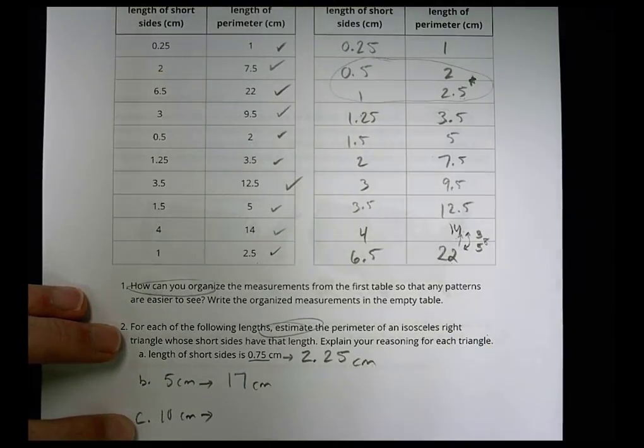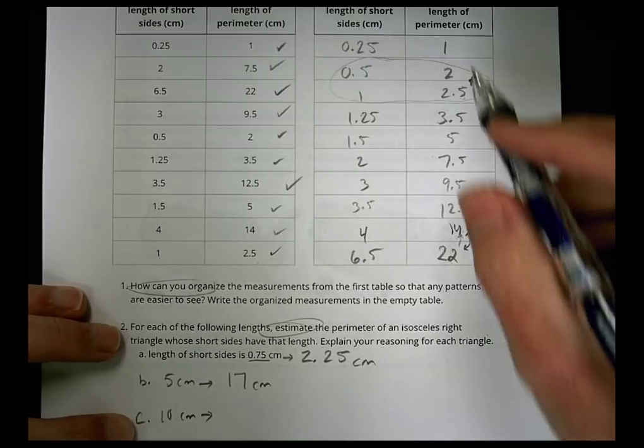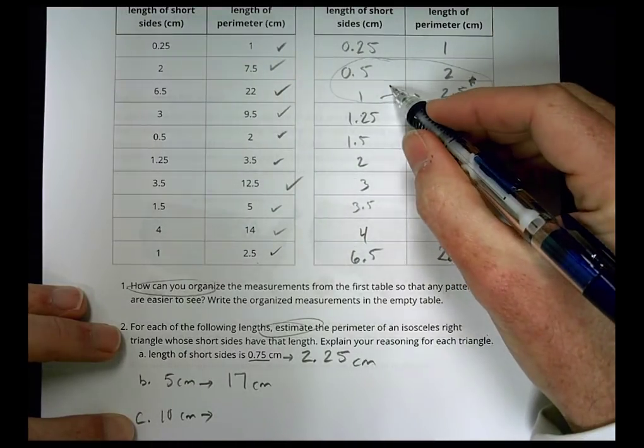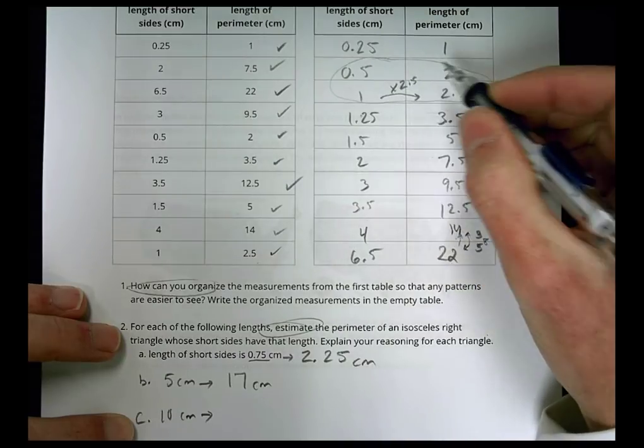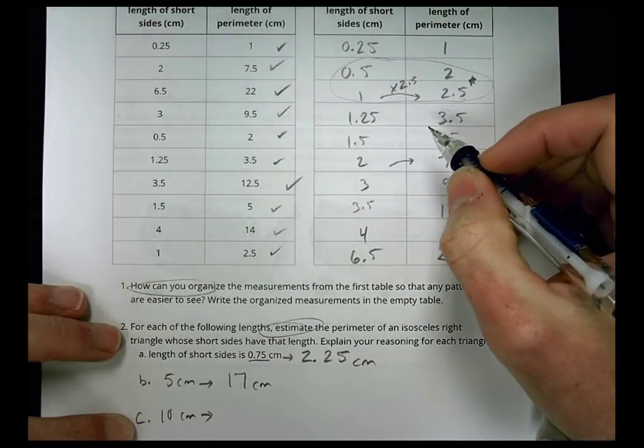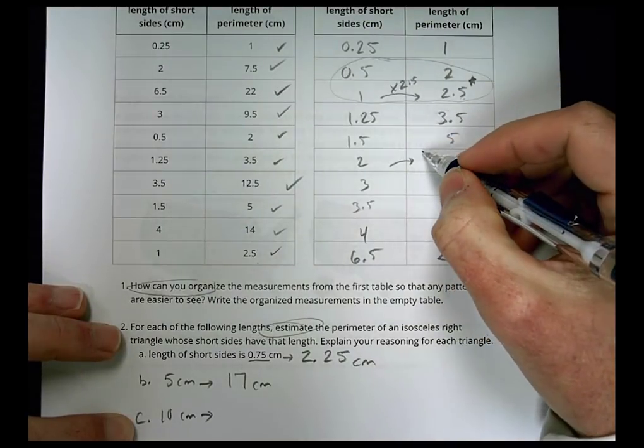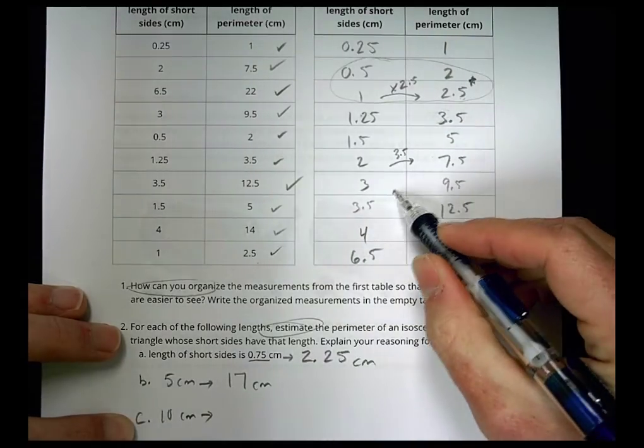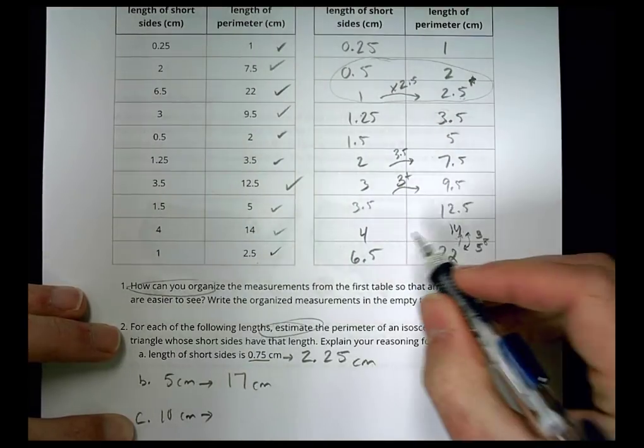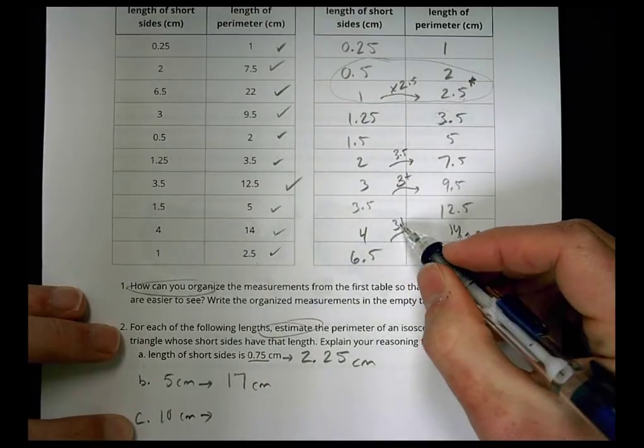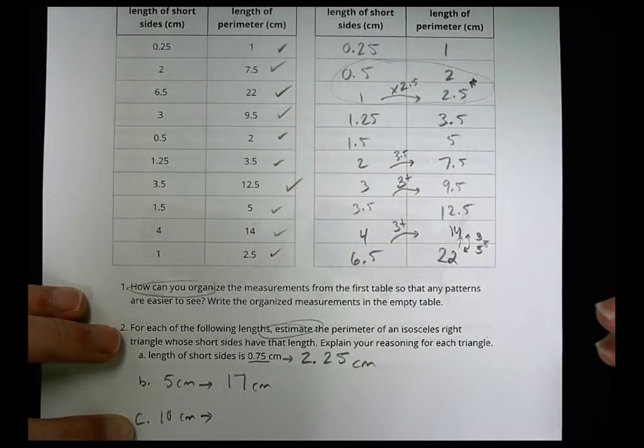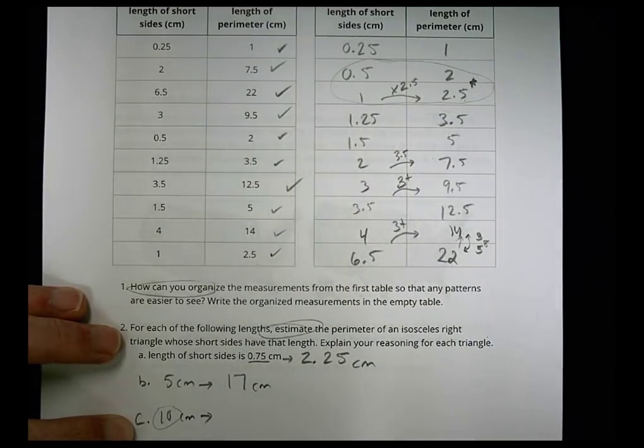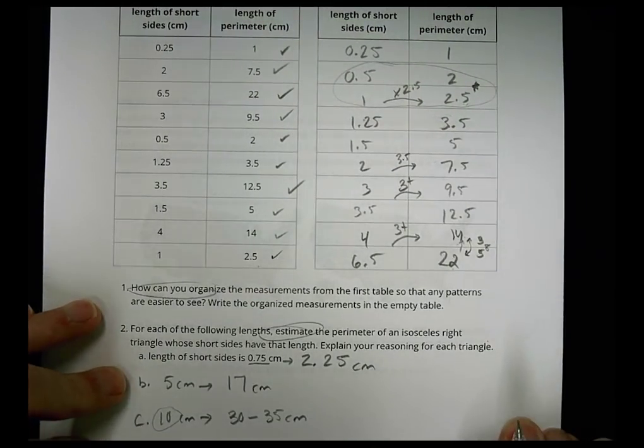In terms of 10 centimeters, it's hard to say exactly. If I look at how you go from 1 to 2.5, it's multiplying by about 2.5. To go from 2 to 7.5, I'm multiplying by more than 3, almost 4, maybe about 3.5. From 3 to 9.5 is a little more than 3, and from 4 to 14 is a little more than 3. I'm always multiplying by a little more than 3, except for that first one. So to estimate, I would multiply 10 by probably a little more than 3, so you could estimate anywhere between 30 and 35 centimeters.